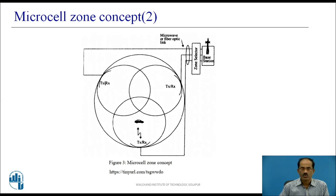The figure shows each of the three zone sites connected to a single base station, sharing the same radio equipment. The zones are connected by coaxial cable, fiber optic cable, or microwave link to the base station. Multiple zones make up a single cell. As a mobile travels within the cell, it is served by the zone with the strongest signal.